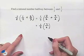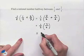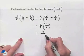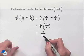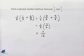Now we're going to multiply numerators together: one times seven is seven. Multiply denominators together: two times six is twelve. The rational number halfway between one-half and two-thirds is seven-twelfths.